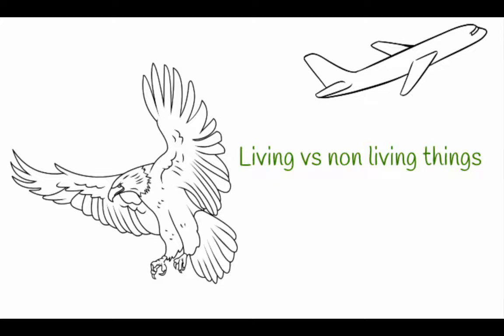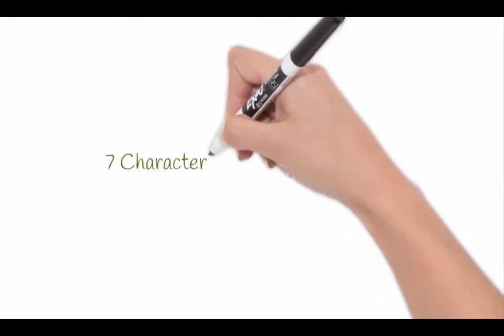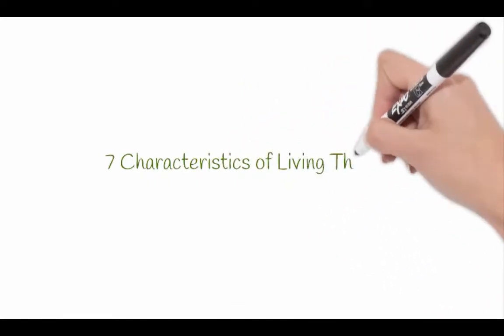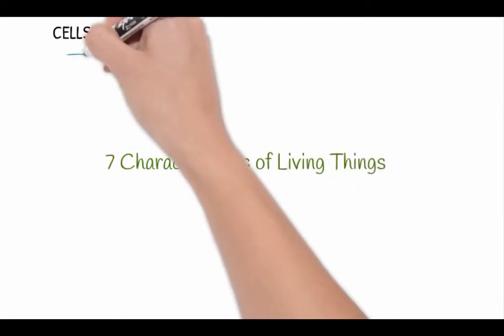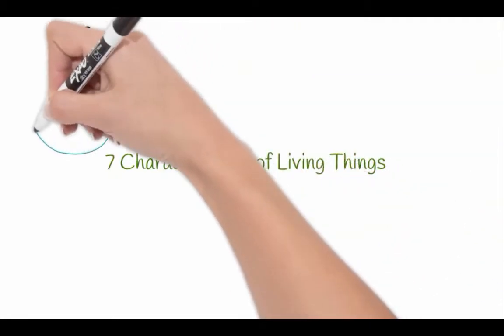Things that eat and things that don't — so how do we know if something is living? In this video we are going to explore how we can classify things as living or non-living. There are seven key characteristics of living things. This first one is not included in those seven characteristics, but it's important to know that all living things are made up of cells.